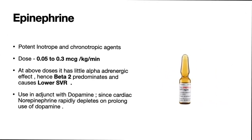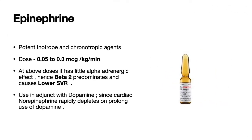Epinephrine is a potent inotropic and chronotropic agent. The dose ranges from 0.05 to 0.3 microgram per kg per minute. At low doses, epinephrine stimulates only beta receptors, thus decreasing vascular resistance. Hence, it is often used as a second line agent along with dopamine to control neonatal shock.